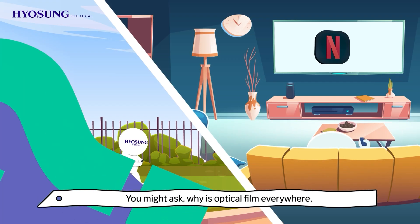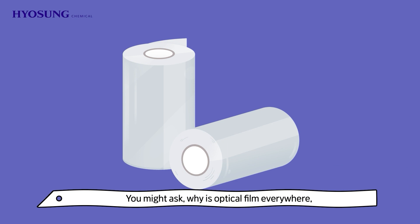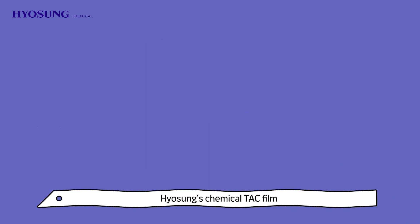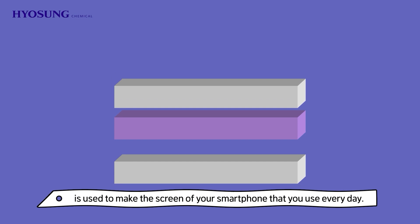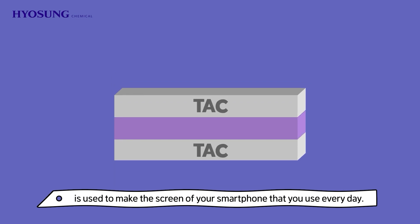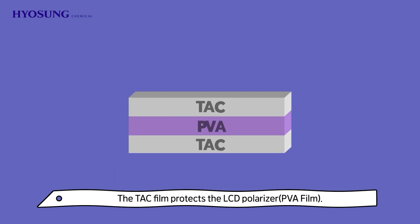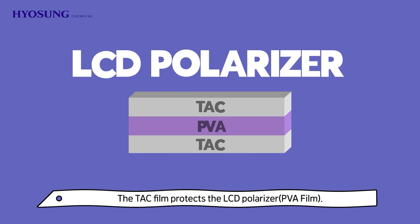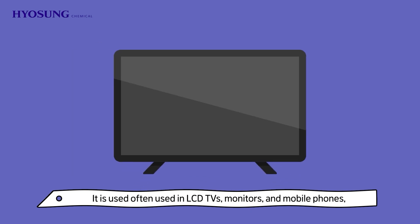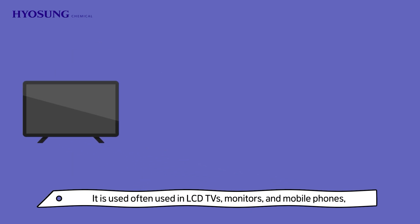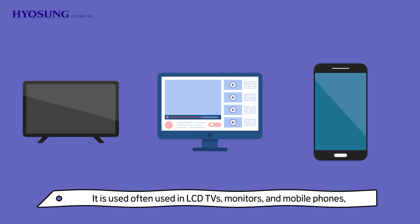You might ask why optical film is everywhere, both indoors and outdoors. Hyosung's chemical TAC film is used to make the screen of your smartphone that you use every day. The TAC film protects the LCD polarizer. It is used often in LCD TVs, monitors, and mobile phones.